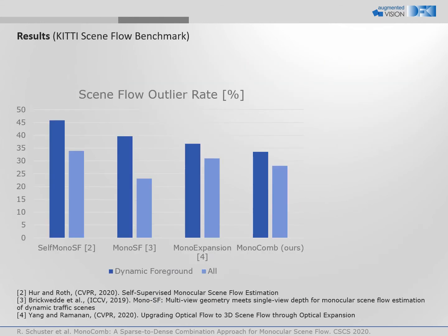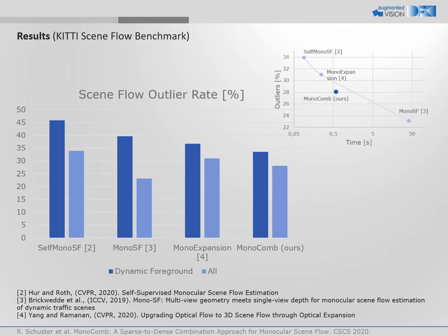We compare MonoComb to state-of-the-art on the KITTI scene flow benchmark and present the scene flow outlier rates. The results for all pixels of the visible scene and for dynamic objects only are given in light and dark blue, respectively. MonoComb achieves the best result for the important dynamic areas, and over all image regions our results are the second best at time of publication. Moreover, MonoComb introduces a favorable trade-off between accuracy and run time.